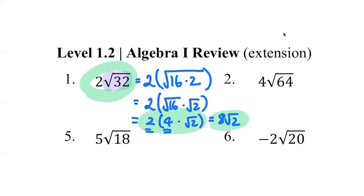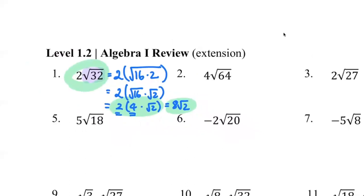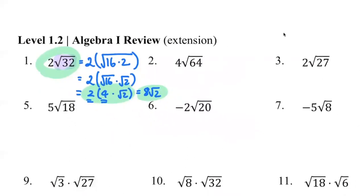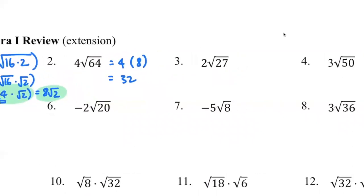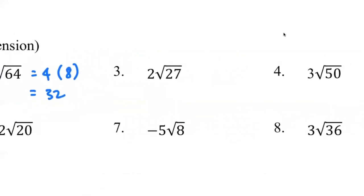Number two is kind of easy. Square root of 64 is 8, right? Don't panic, just 8. So 8 times 4 is 32, done. That's very nice.